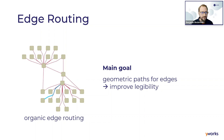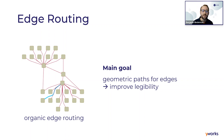Another idea is to use organic edge routing, where the paths of the edges have a more organic style. This is what I want to present today — how you can do this for your graph layouts and connected data, obtaining layouts that are not cluttered with edge crossings or node overlaps.